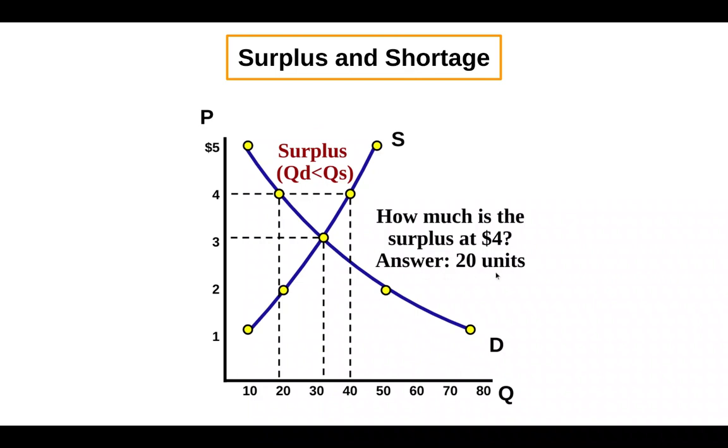And so the distance between these two is called a surplus. And in this case, a surplus of 20 units, 40 minus 20. And so what sellers are going to want to do to mitigate this surplus is to lower the price back to equilibrium.